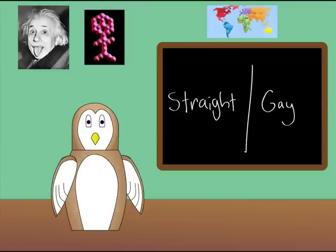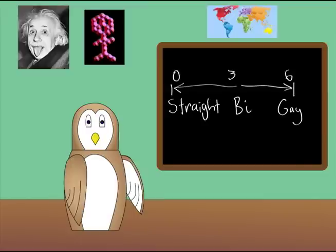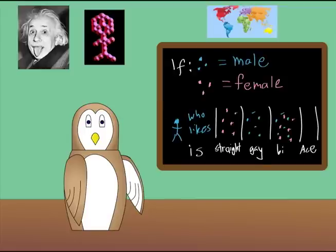When most people think of orientation, it usually brings up a binary classification of straight or gay. Sometimes they've expanded to include bi, but there's so much more to it than that. A really basic definition of orientation is describing the gender composition of who a person is attracted to relative to their own gender. There's a lot more to it than that, but that's a really good starting point to build from.